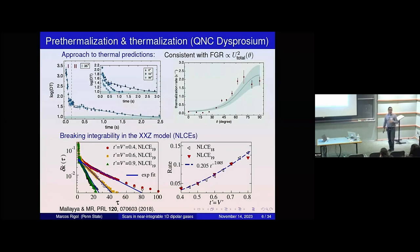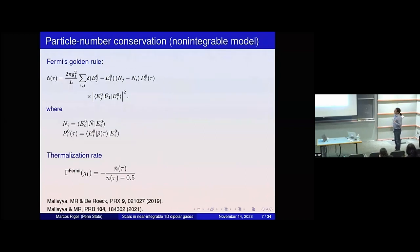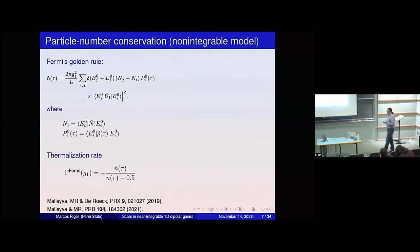This behavior is not unique to integrable models. Even if you have a non-integrable model and you break a conserved quantity, you get slow dynamics. For example, in both integrable and non-integrable models with particle number conservation, if you break that conservation you get a rate calculable by a Fermi golden rule equation.